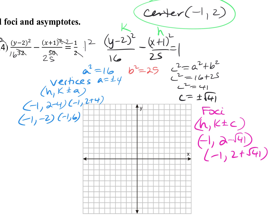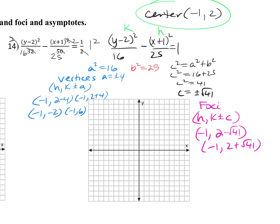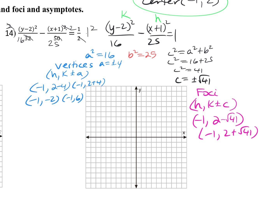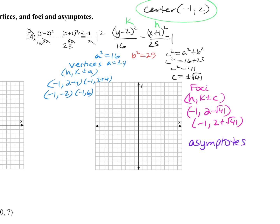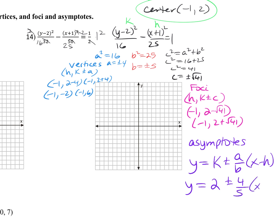For the asymptotes — and on the test you have to graph them — the formula is y equals k plus or minus (a over b) times (x minus h). My k is 2, a is 4, b is 5, and h is negative 1, so it becomes y equals 2 plus or minus (4/5)(x plus 1). That's your asymptote equation.